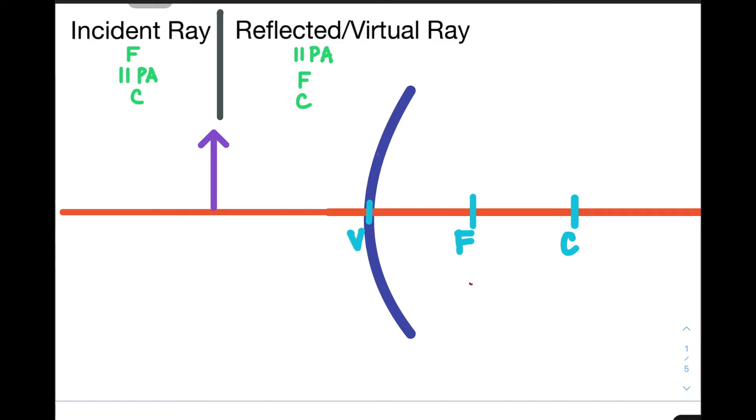So, let's have our example here. You will notice that the object is represented by an arrow to denote its orientation and its size. Currently, it is located above the principal axis. So, let us see what happens to it when we show it in front of a convex mirror.